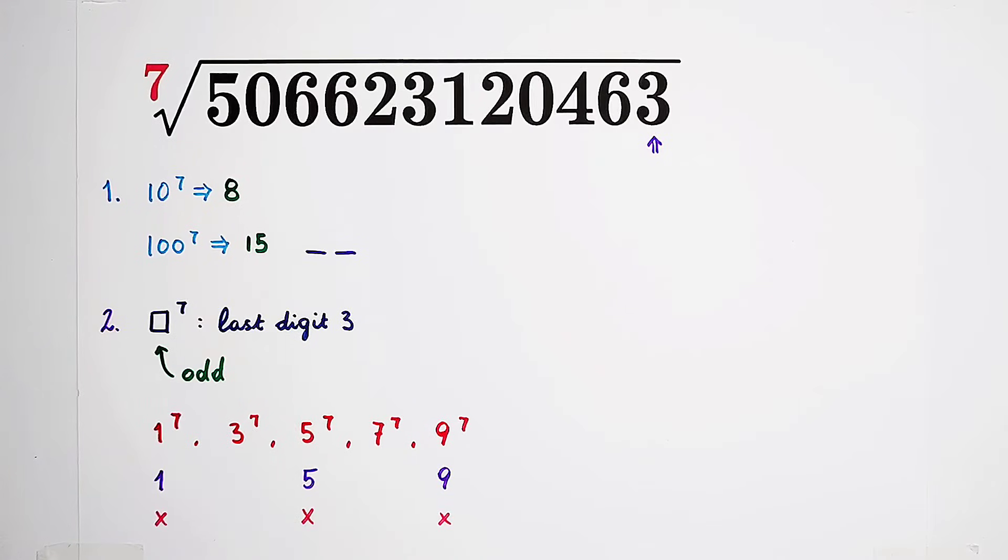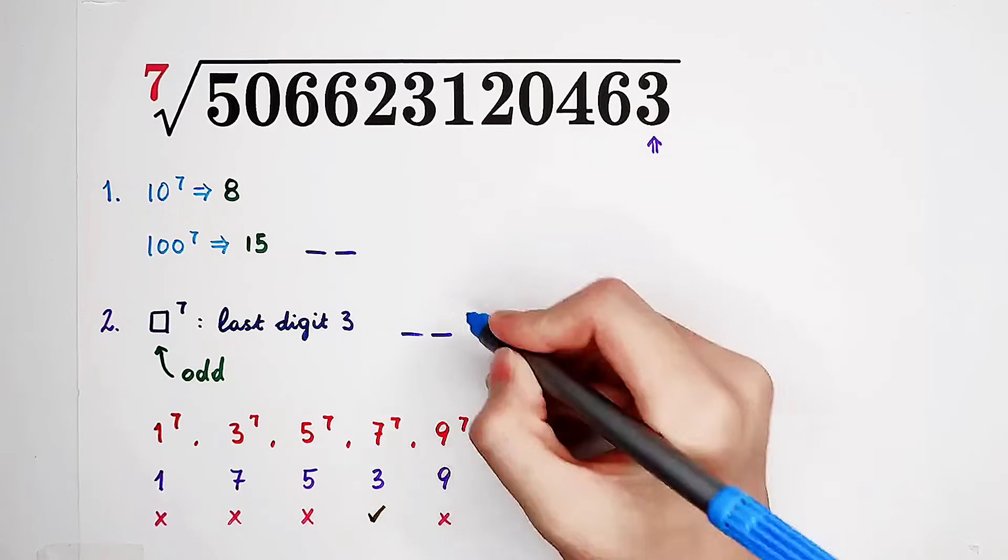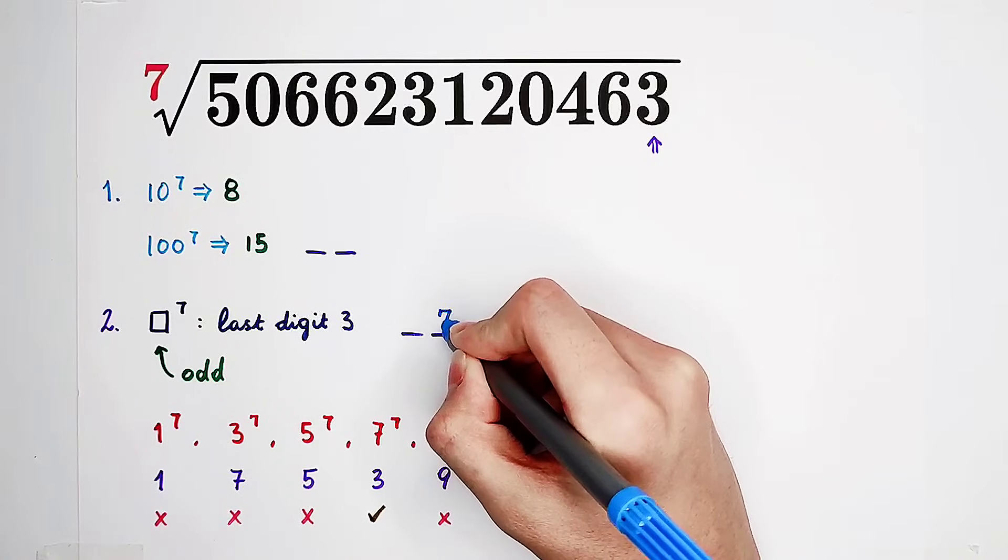If you have some patience, you'll find out the answer. For example, for 3 to the power of 7, the unit digit of 3 to power of 1 will be 3, of 3 to power of 2 will be 9, of 3 to power of 3 will be 7, of 3 to power of 4 will be 1, of 3 to power of 5 will be 3, of 3 to power of 6 will again be 9, and of 3 to power of 7 will be 7. And for 7 to the power of 7, of course, this is the only right one. The unit digit is 7. It has to be 7.